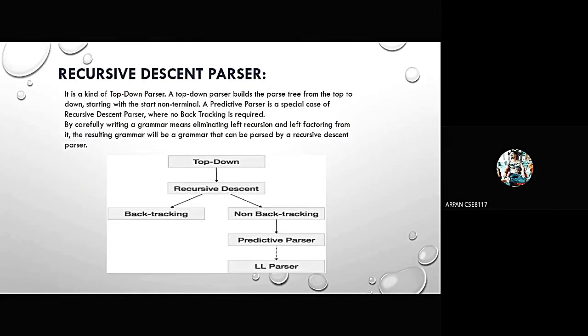Let us come to the main topic of the presentation, that is the recursive descent parser. It is a kind of top-down parser. A top-down parser builds the parse tree from top to down starting with the start node terminal. A predictive parser is a special case of recursive descent parser where no backtracking is required. By carefully writing a grammar, means eliminating left recursion and left factoring from it, the resulting grammar will be a grammar that can be passed by a recursive descent parser.